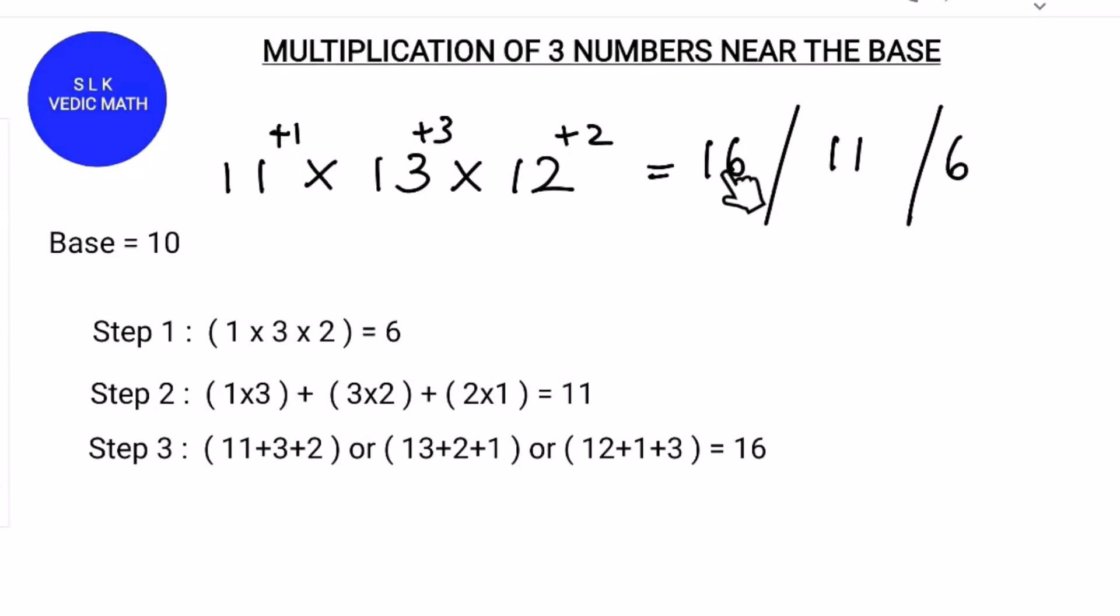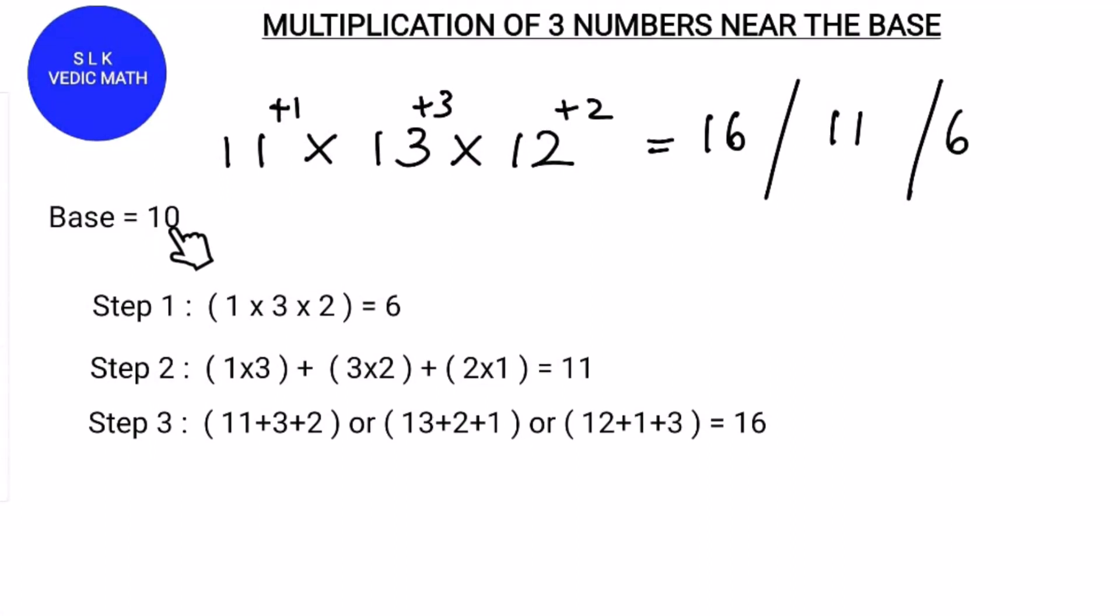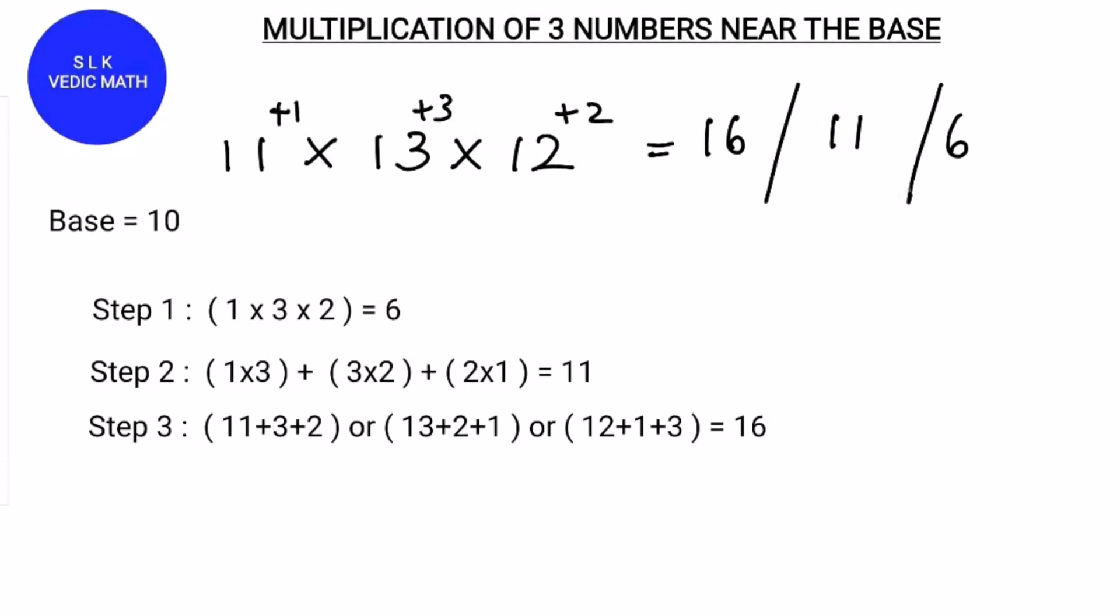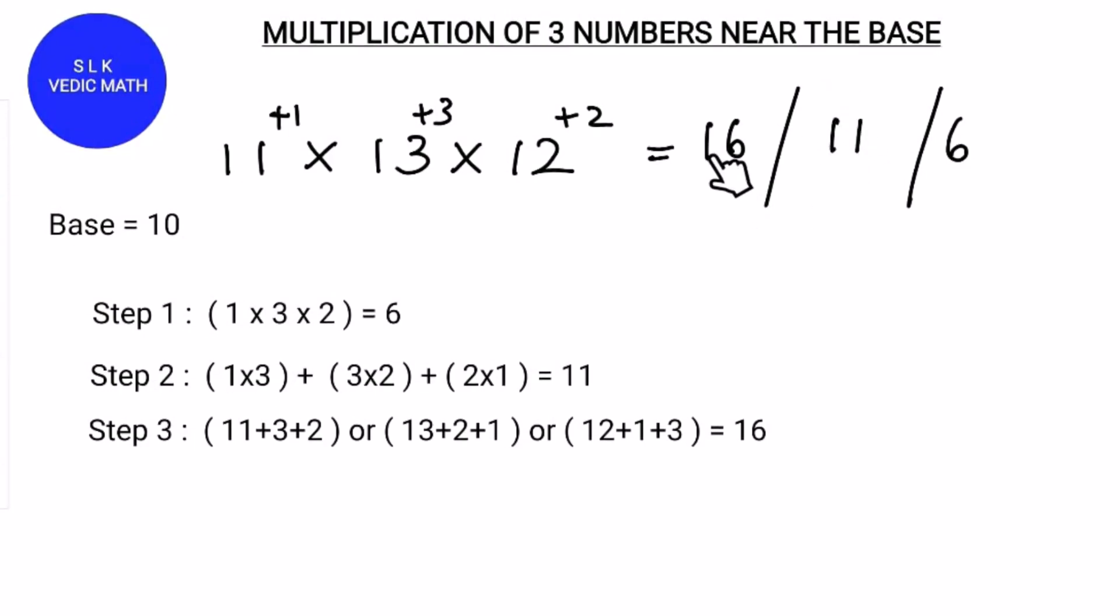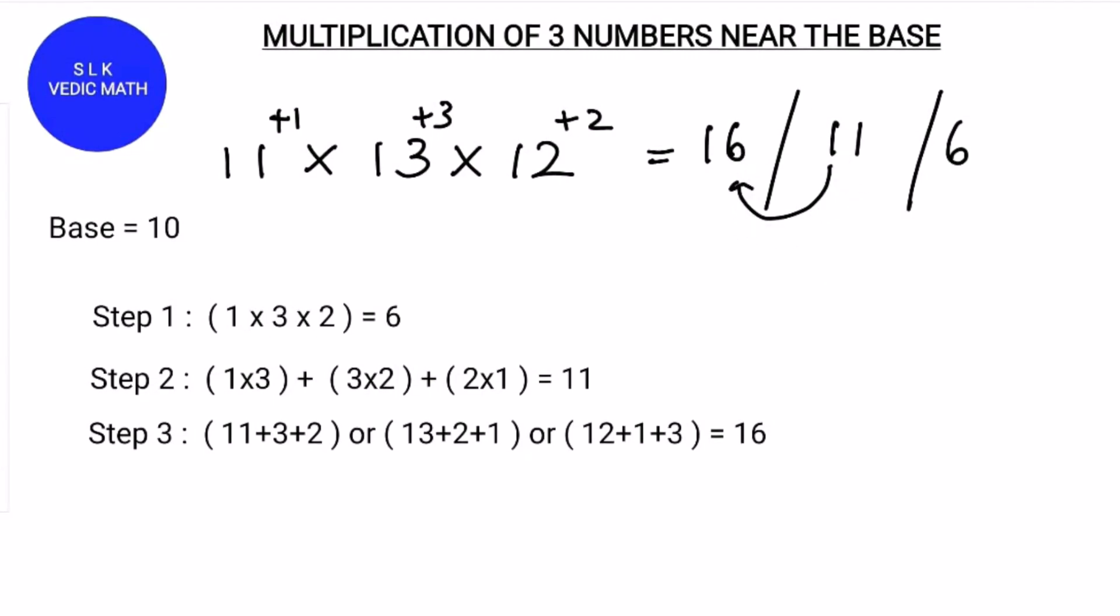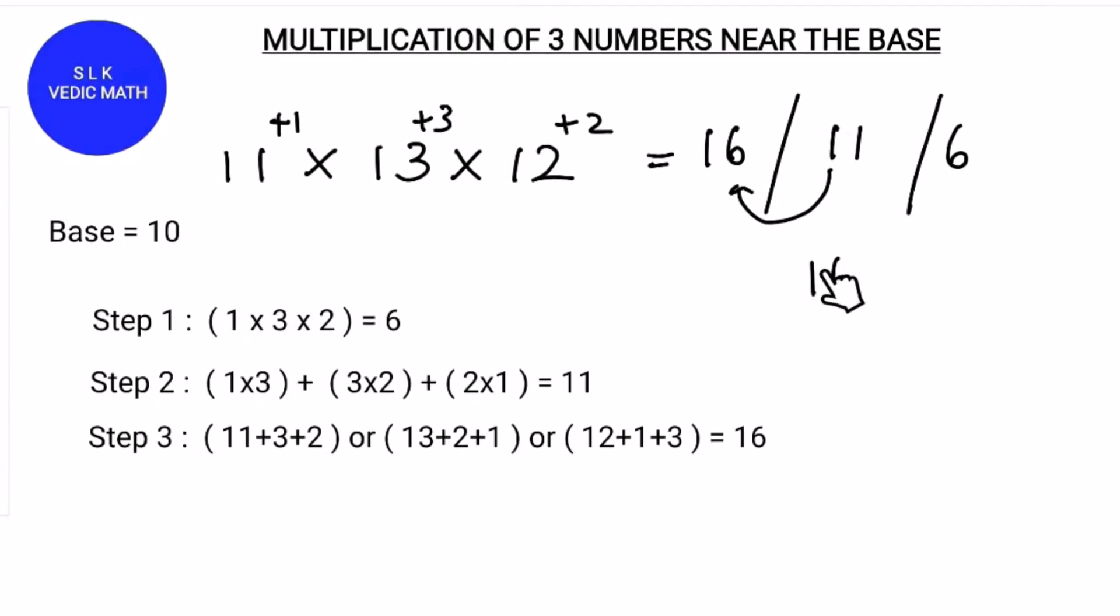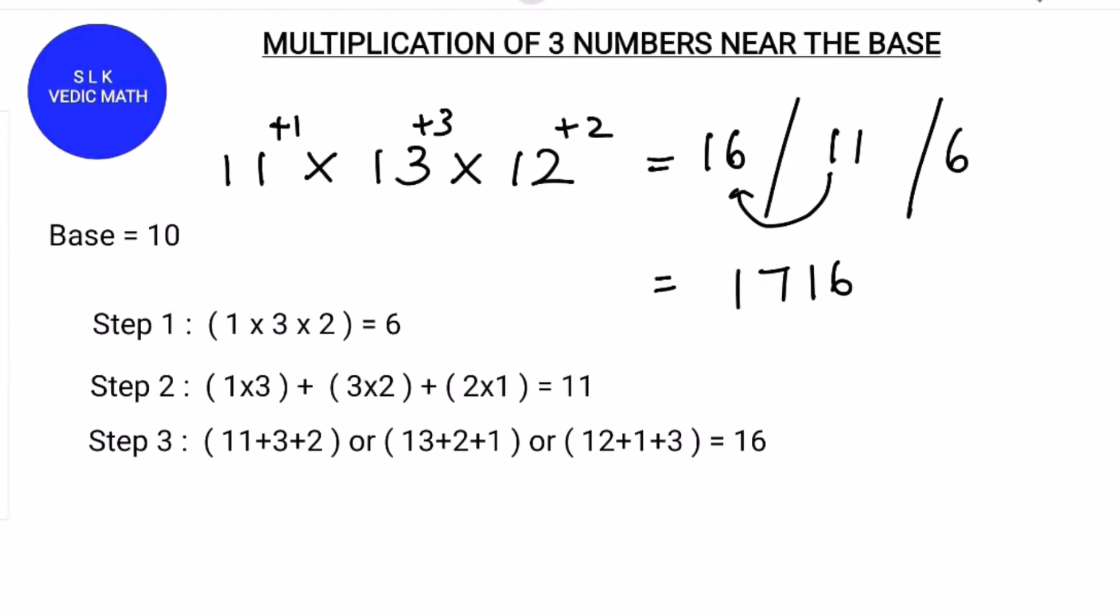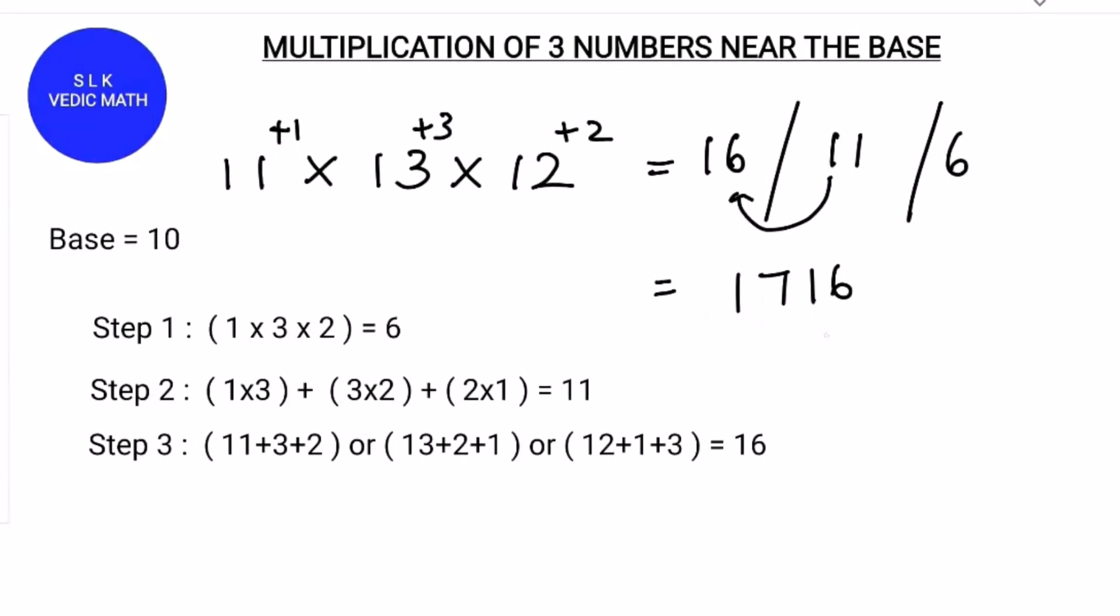Now write 16 in the first part. Here the base is 10. The base 10 has 1 zero, so there is supposed to be 1 digit in each part. 11 is a 2 digit number, so we carry this 1 to the right and add 1 plus 6. So write this 6 down as it is, then write this 1. Next we add 1 plus 6 which is 7. So 11 × 13 × 12 is 1716.